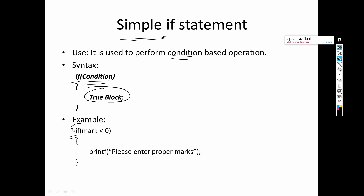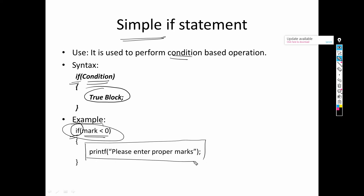Now we convert that statement into our syntax. We write 'if', then the condition: marks less than 0. If marks less than 0, then the entered marks are improper because marks cannot be less than 0. If this condition is true, we need to print that the marks entered are not proper — we will prompt a message: please enter proper marks.